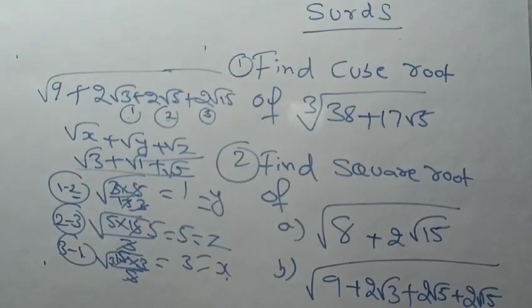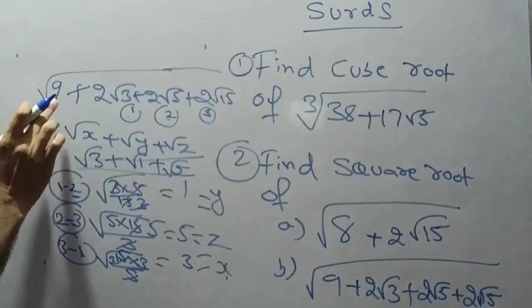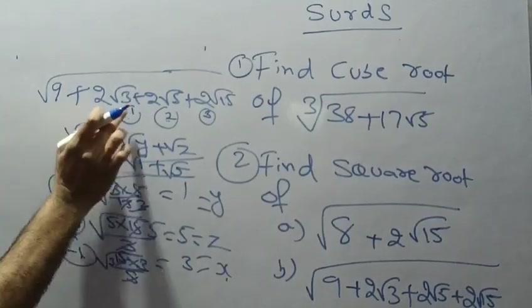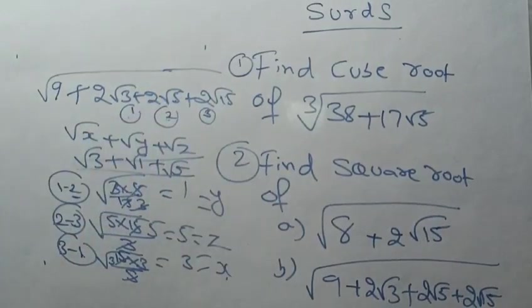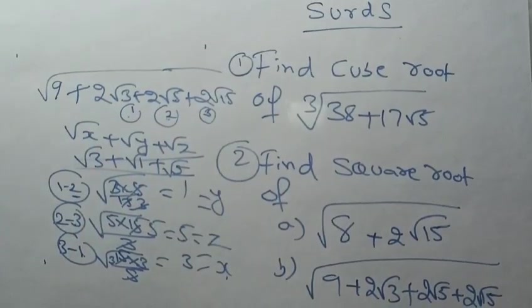So the formula for x, y, z applies when the problem is of the form (9 + 2√3 + 2√5 + 2√15). This is the shortcut method for nested square roots with three terms.